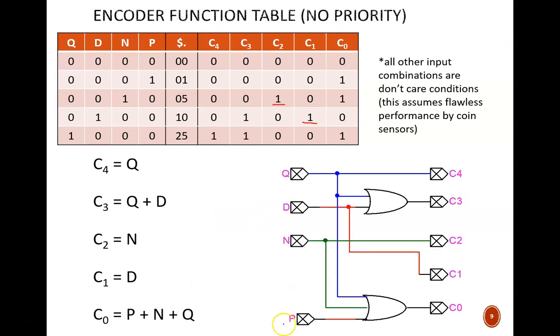The four coin inputs lead to a 5-bit output. What happens if no coins are activated? Then the output is all zeros, which is exactly what we want.